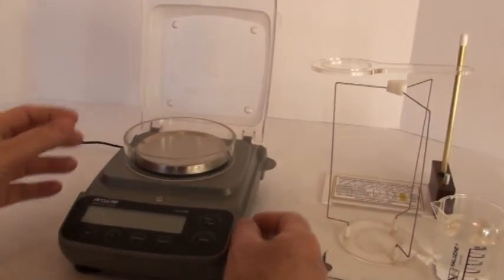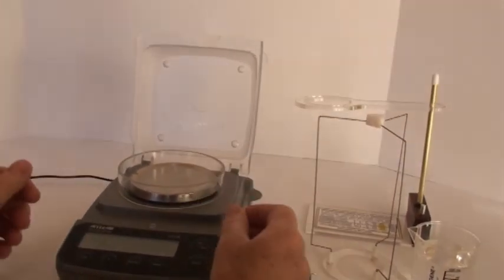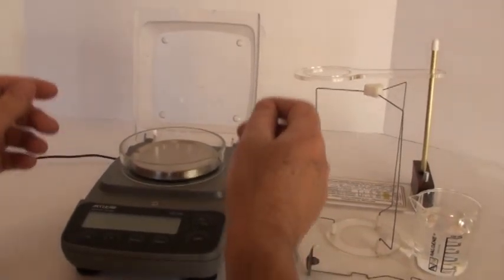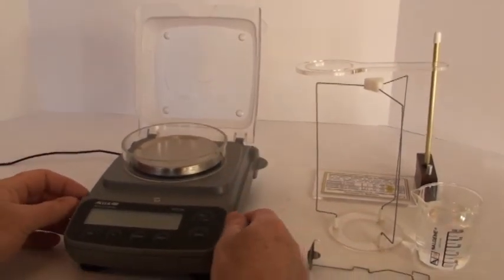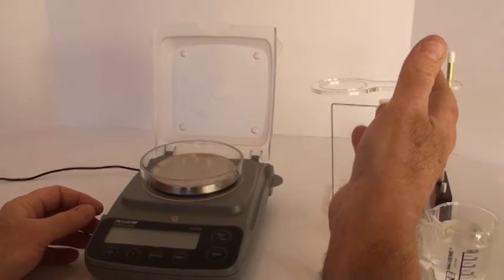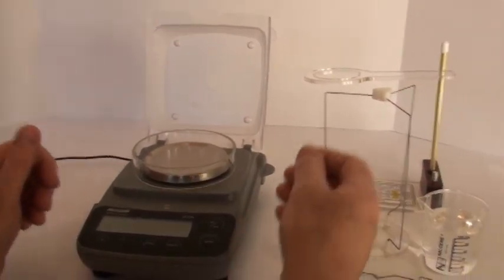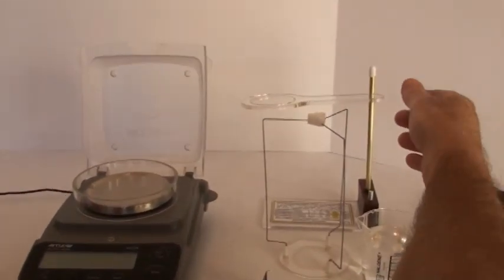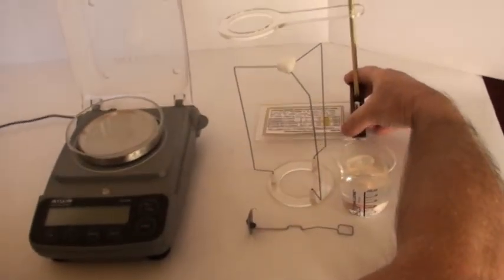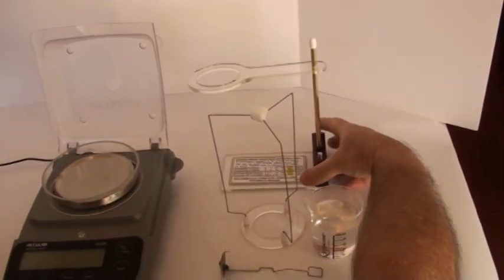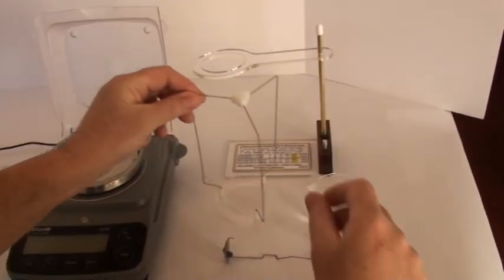Also, if your scale has a draft shield assembly above the platform, you'll need to open one or two doors as needed so that our components fit in place. These are our components over here. This is the beaker holder.